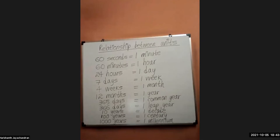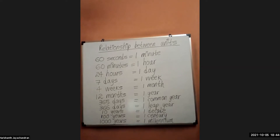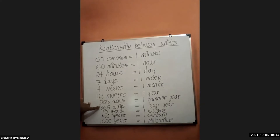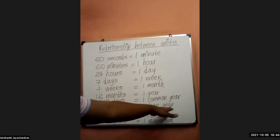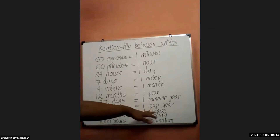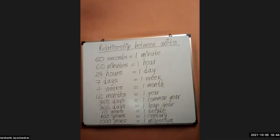To recap: 60 seconds is equal to one minute, 60 minutes is equal to one hour, 24 hours is equal to one day, seven days is equal to one week, four weeks is equal to one month, 12 months is equal to one year, 365 days is one common year, 366 days is one leap year which comes once every four years, 10 years is one decade, 100 years is one century, and 1,000 years is one millennium.